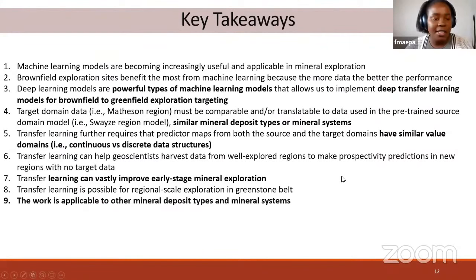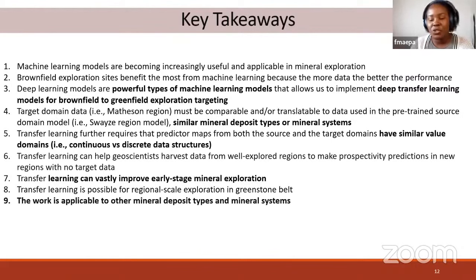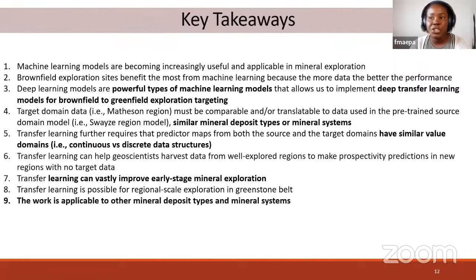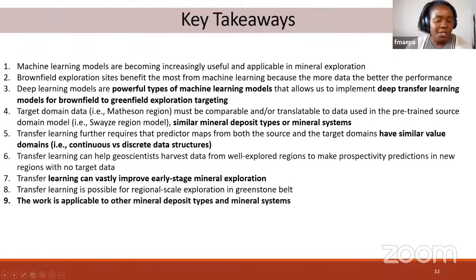Key takeaways: machine learning models are becoming increasingly useful in mineral exploration targeting. Brownfield exploration sites benefit most because you need enough data to train a suitable model. Transfer learning and deep neural networks can help transfer information from one region to the next when creating a prospectivity map, and can help geoscientists harvest knowledge from well-explored regions to make prospectivity predictions in new areas that may lack training data.